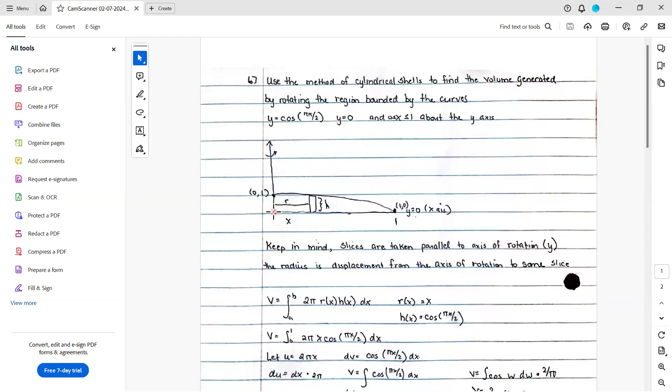The radius is the displacement from the axis of rotation to some slice in our rectangle. We don't know how far out this rectangle is going to get. It's going to get further and further out as we slice until we've moved all through the picture, all through the shape.